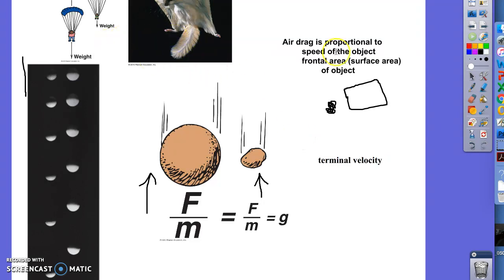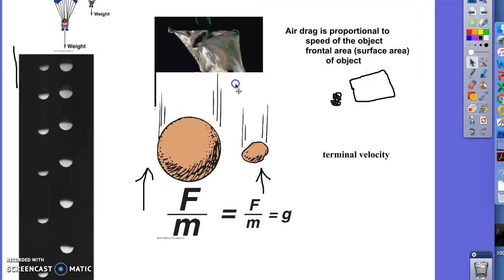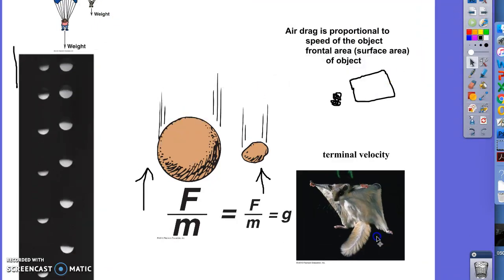An example of an animal that uses air resistance is a flying squirrel. Flying squirrels jump from one tree to the next, using gravity as they fall. As they come in for a landing, they spread out their feet, arms, and legs, making a big flat surface, which increases their air drag, slows them down, and allows them to land gently on a branch. Otherwise, if gravity kept pulling them faster and faster, they would smash into the branch and hurt themselves.